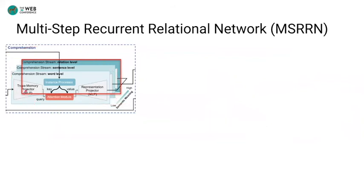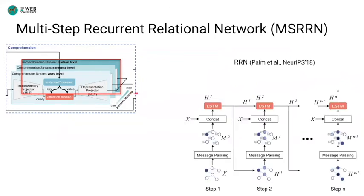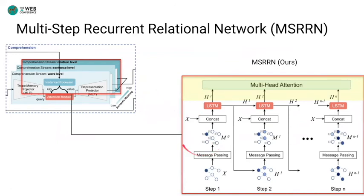For relation level comprehension, we design a graph-based network, the Multi-Step Recurrent Relational Network (MSRN), to model relation level semantics. Our MSRN is inspired by prior work — the Recurrent Relational Network on bAbI tasks. RRN utilizes a graph neural network and an LSTM to perform step-by-step reasoning. We use a graph to embed characters and their relations, then extend RRN by leveraging the output of each step to utilize role-interaction cues progressively.